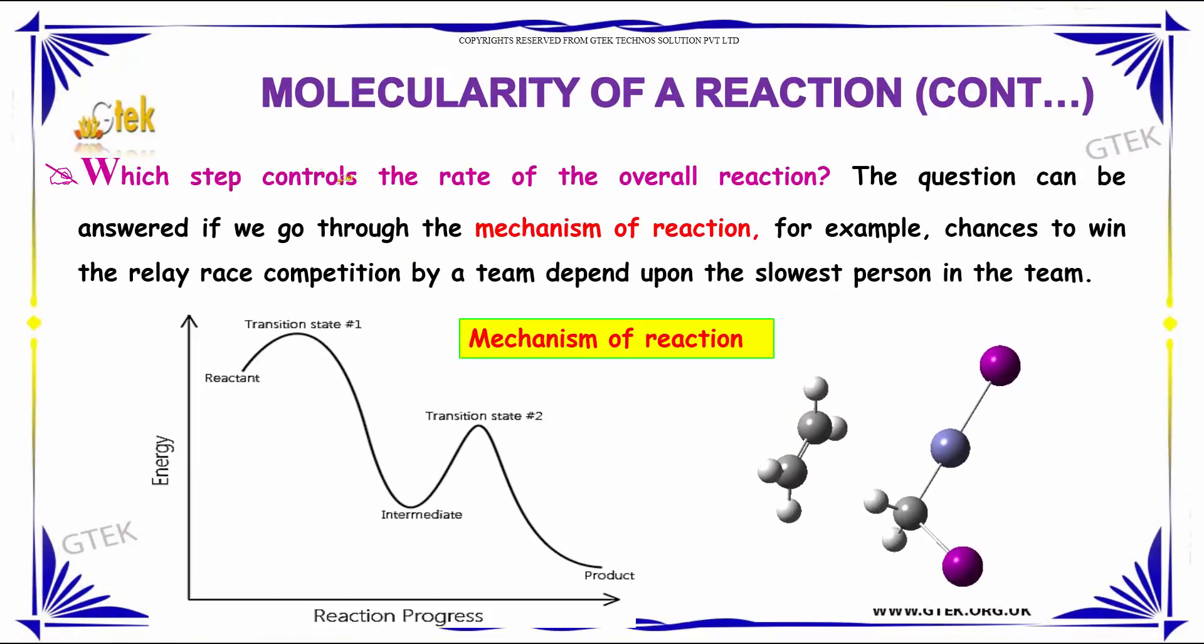Which step controls the rate of the overall reaction? That's my question. The question can be answered if you go through the mechanism of reactions. For example, chances to win the relay race competition by a team depend upon the slowest person in the team.